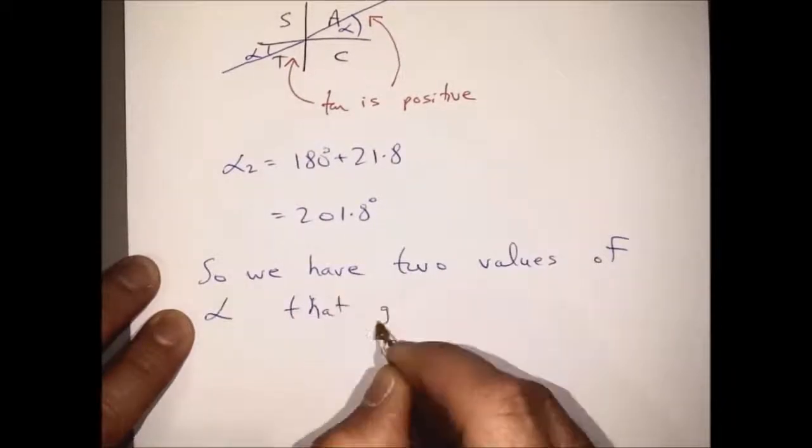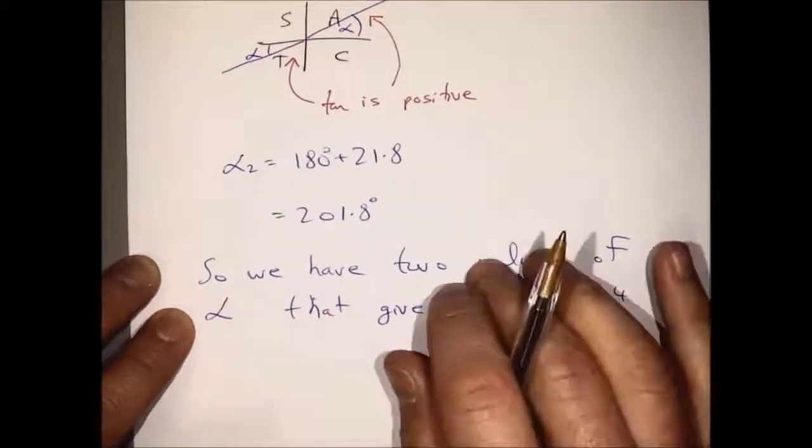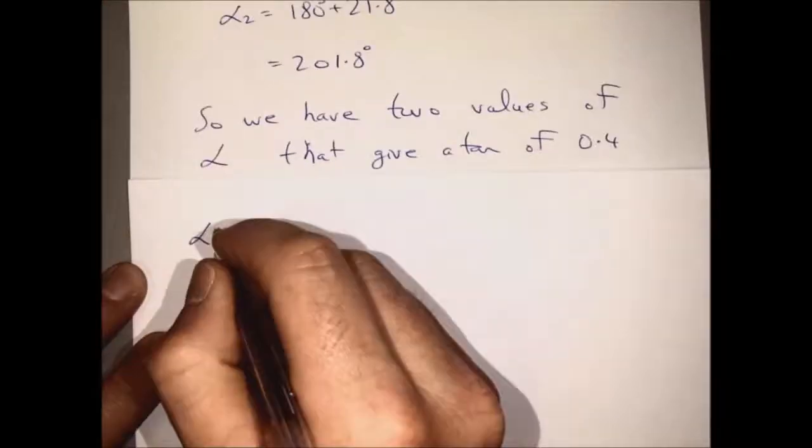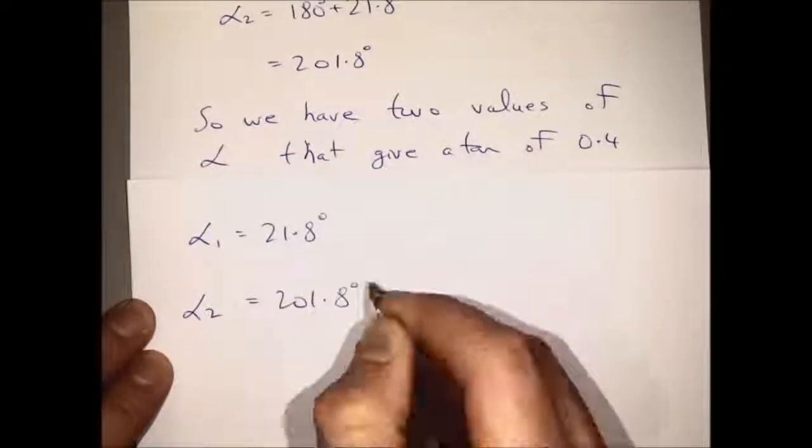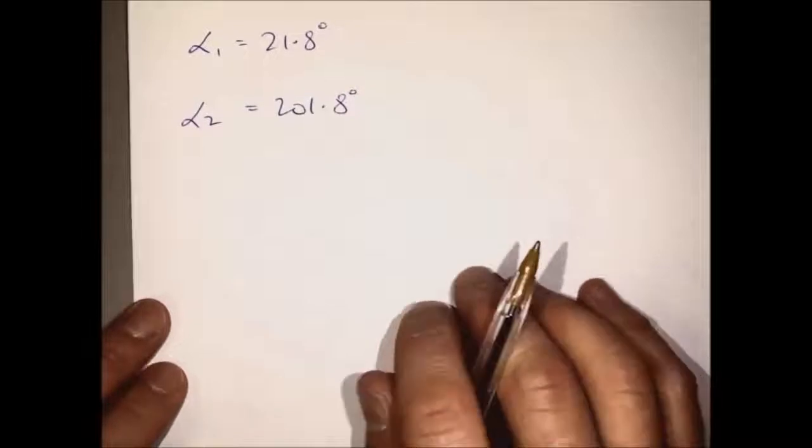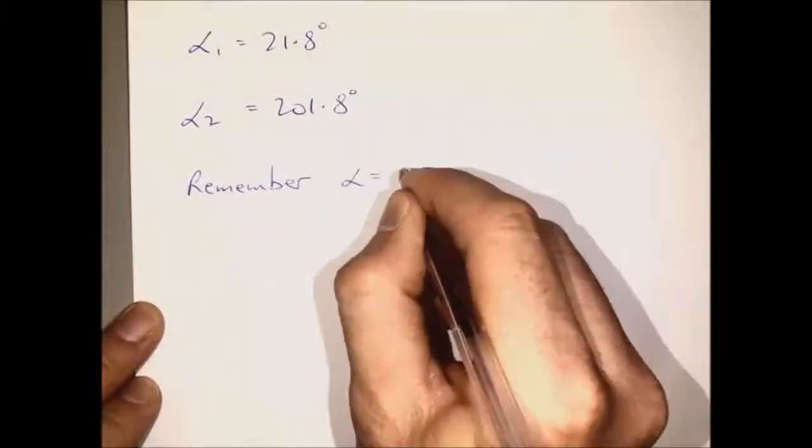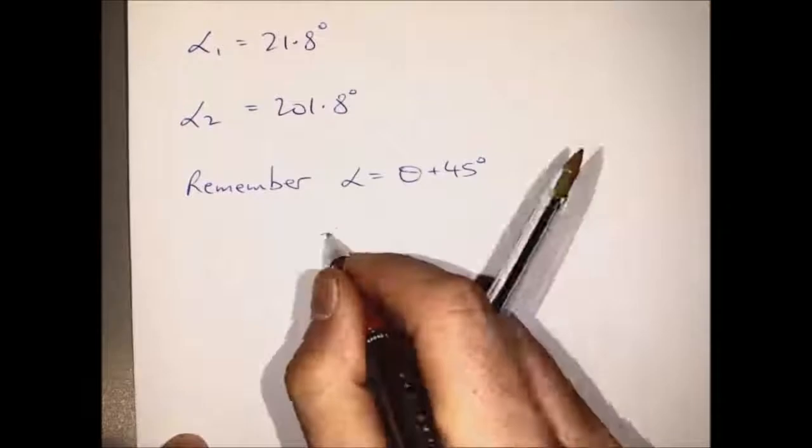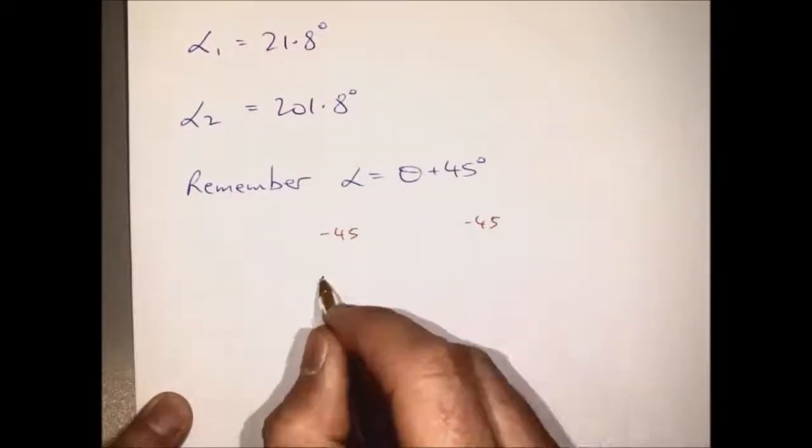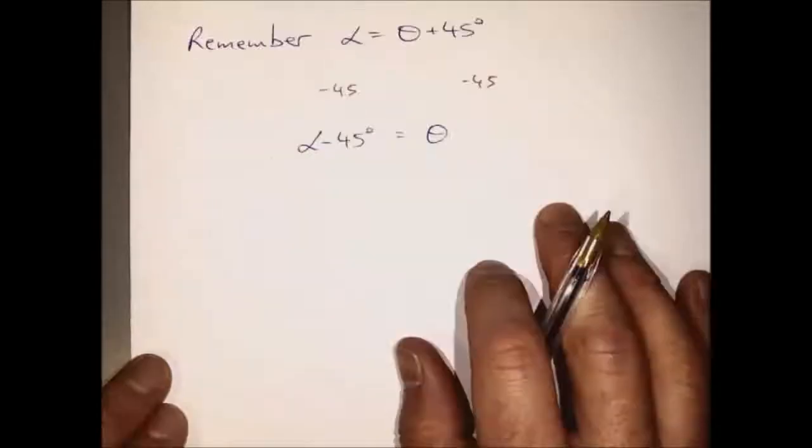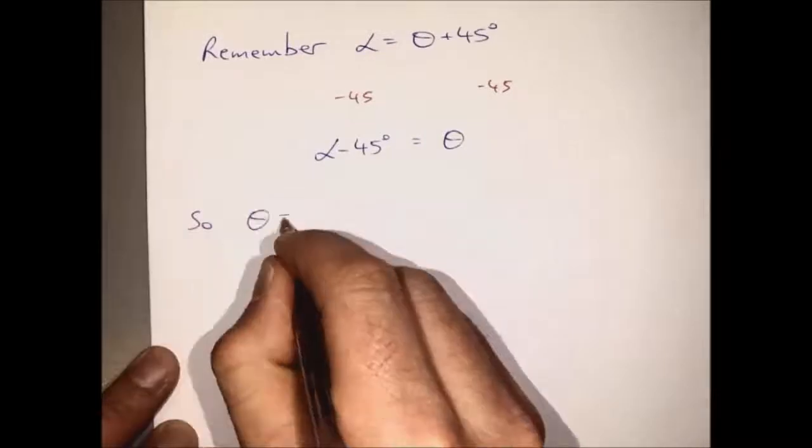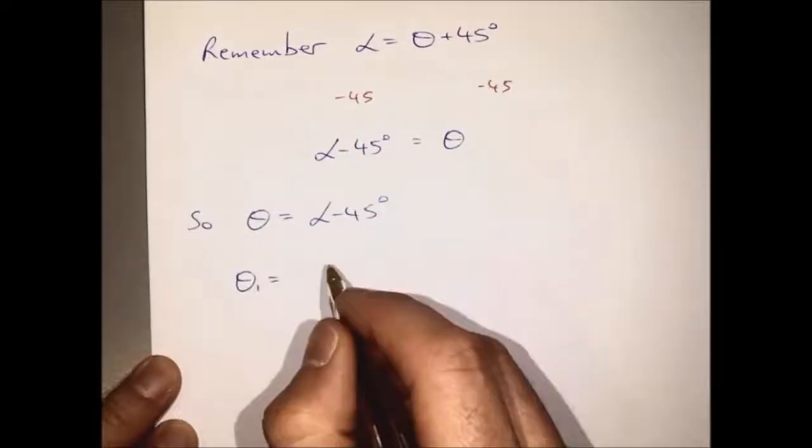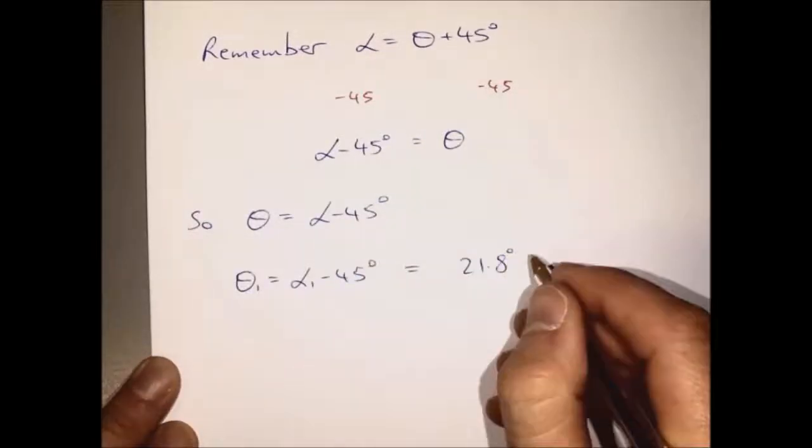So now we have two values of alpha that give a tan of 0.4. Alpha 1 equals 21.8 and alpha 2 equals 201.8. Remember from before alpha equals theta plus 45. So subtracting 45 from both sides we get theta equals alpha minus 45. So we can use this little formula to figure out our two values for theta.